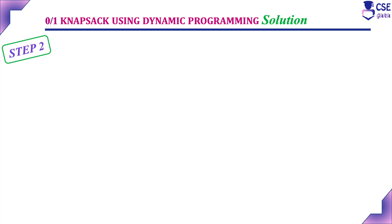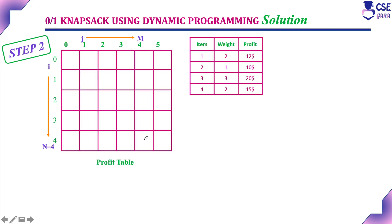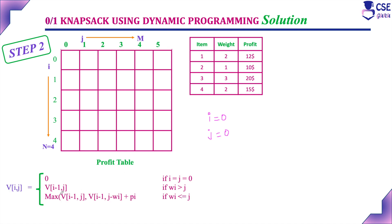Step 2: start from the initial solution. With the initial adjacency table, we consider the initial solution where i=0 and j=0. From the recurrence relation, when i=0 or j=0, V(i, j) = 0. So the first row and first column are all filled with 0 since i=0 or j=0 means the profit is 0. This is the profit table after step 2.